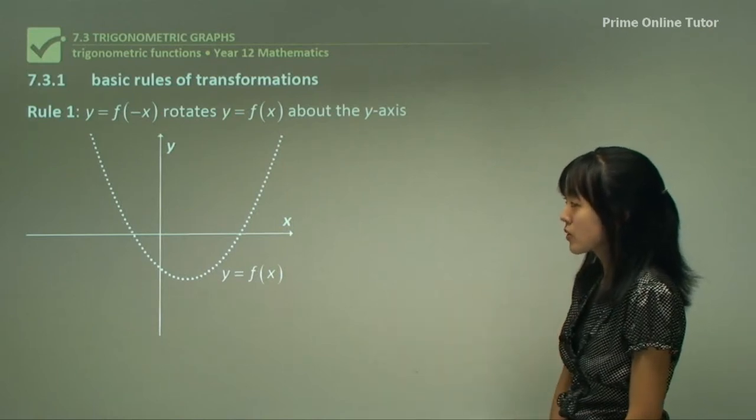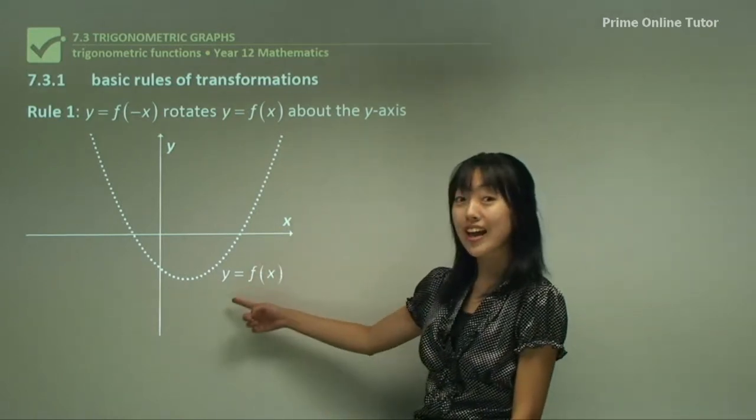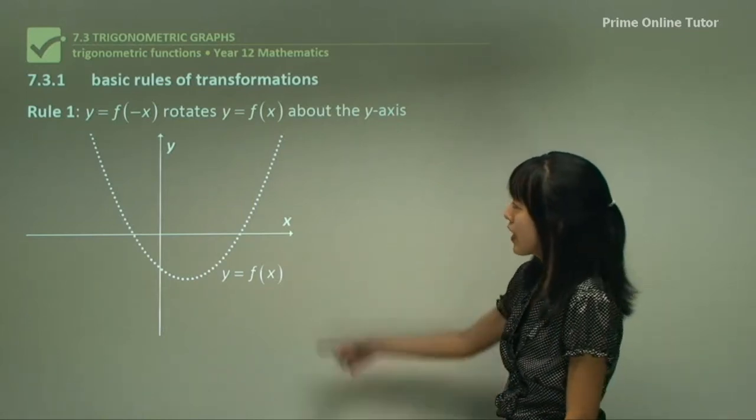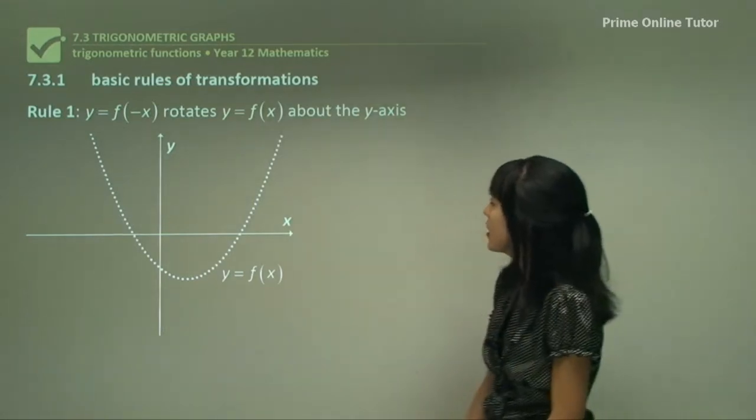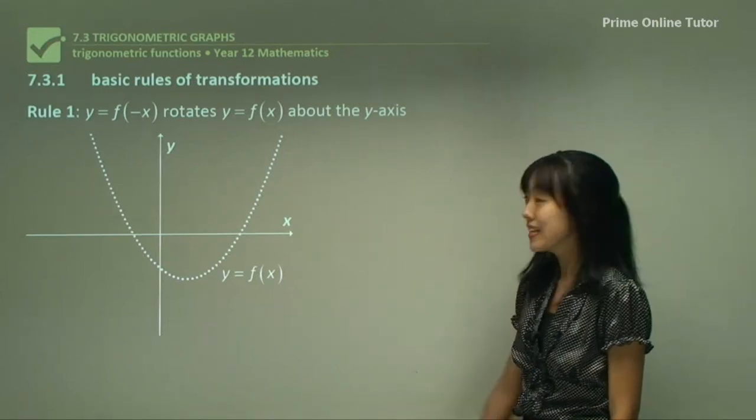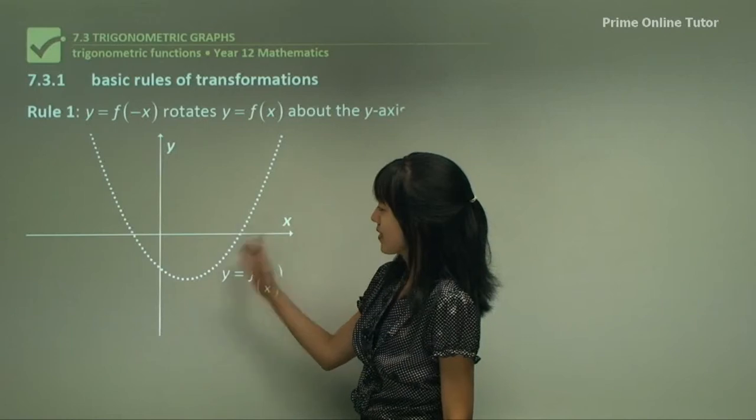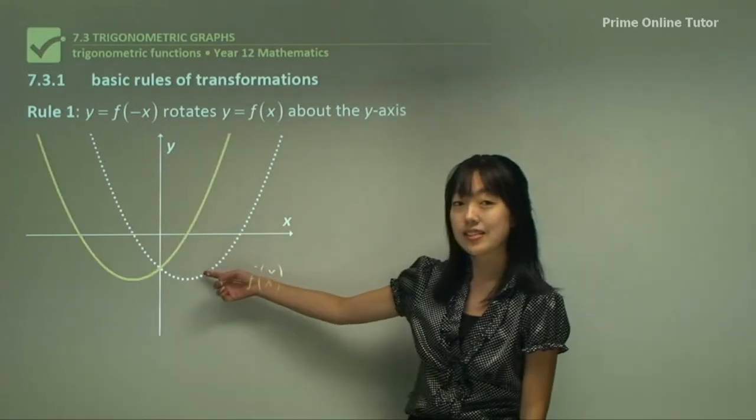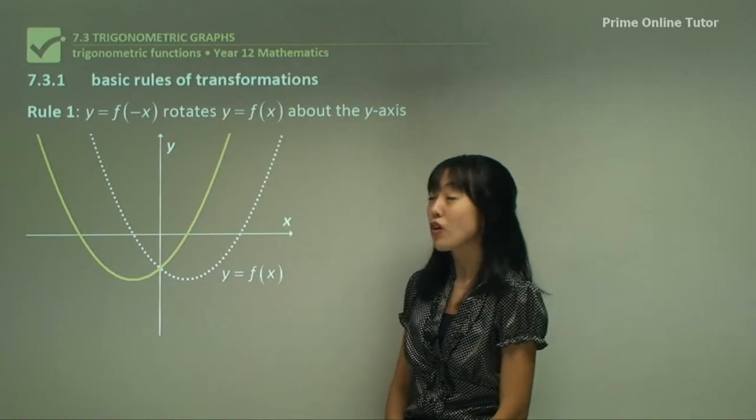Here is the first rule. Here we have y equals f(x). Rule one describes what would happen if there was a negative within the function here. What would happen then would be that it would rotate about this y-axis. If you imagine it rotating, it would look something like this. So that is for y equals f of negative x.